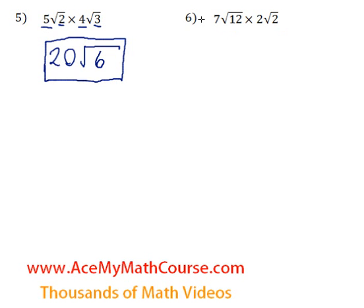Here we have question number six. 7 root 12 times 2 root 2. We start by multiplying the numbers outside of the roots. 7 times 2 is 14, times the square root of 12 times 2, which is 24.